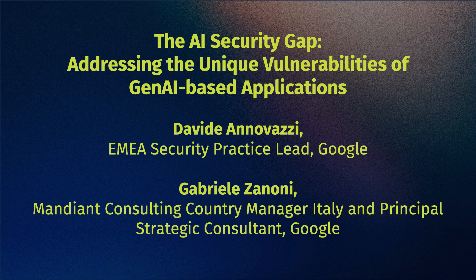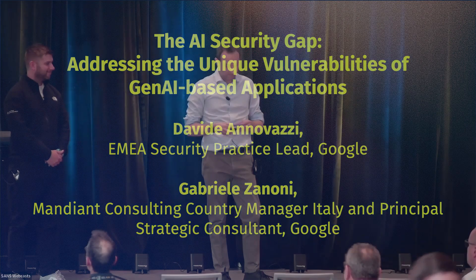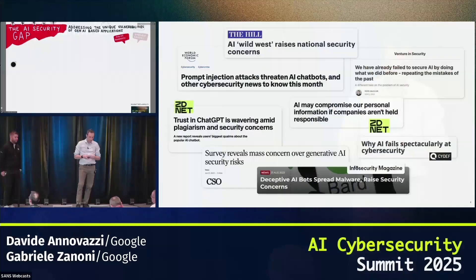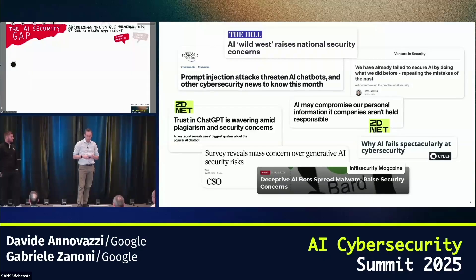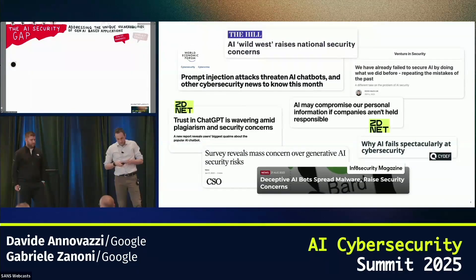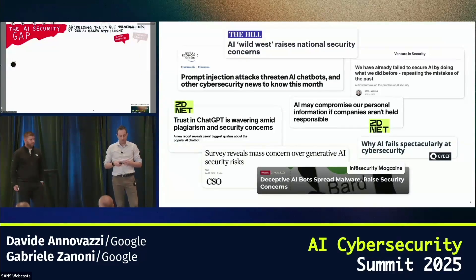This slide highlights some recent and significant security concerns related to the use of AI. Some of these concerns are about how AI uses data. Some other concerns are more related to how people may use AI in a malicious way — for example, the image at the bottom is about how AI could be used to create or spread malware.